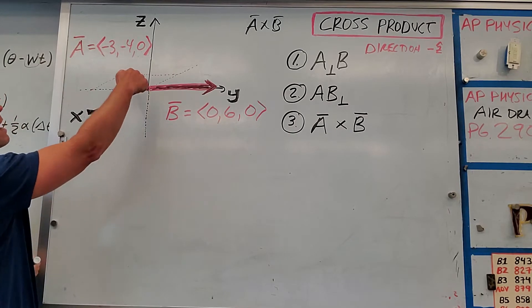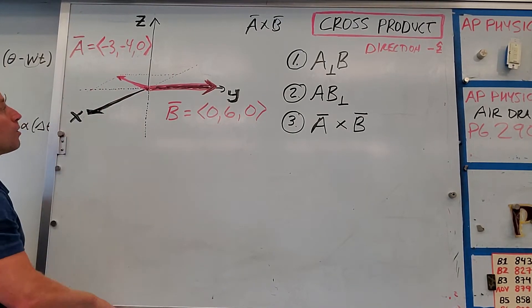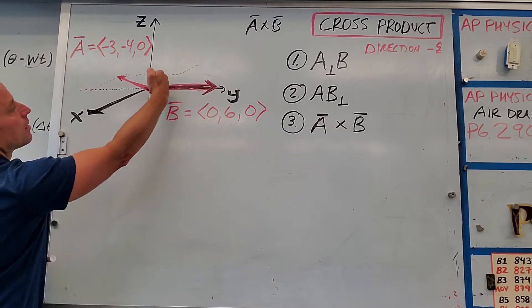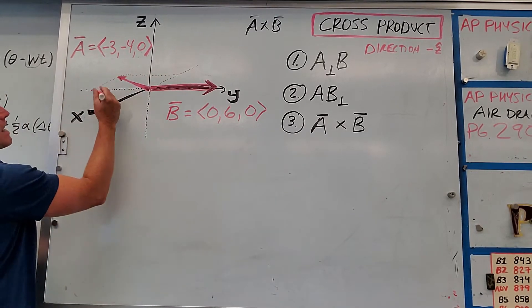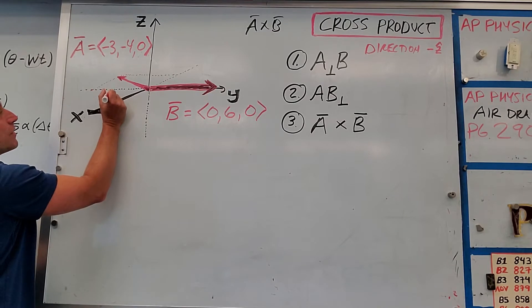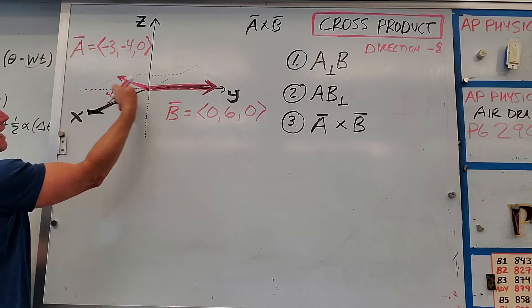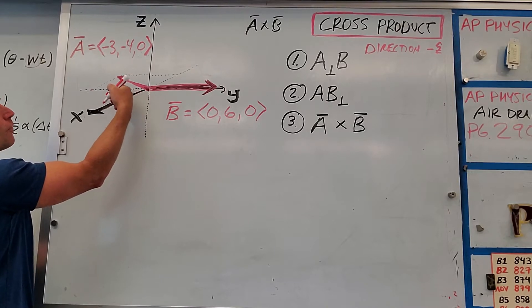So A has two parts, or two components. One component that's parallel to B goes back this way, and that's four units long. So this component, which would be like A parallel, that's four units long.